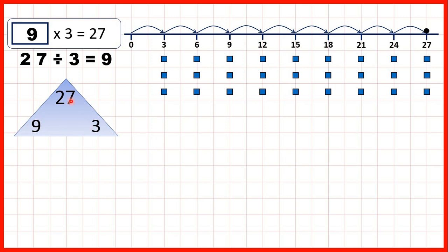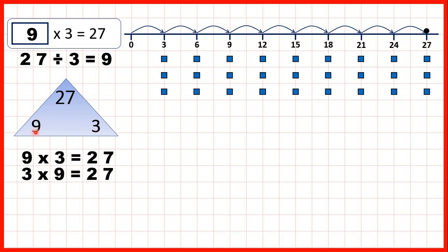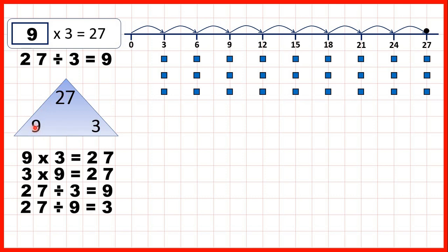This number family triangle tells us 4 different calculations: 9 times 3 is 27, and 3 times 9 is 27, because we can multiply numbers in any order to get the same answer. It also gives us two division facts: 27 divided by 3 is 9, and 27 divided by 9 is 3. If we divide the top number by one of the bottom numbers, we get the other bottom number.